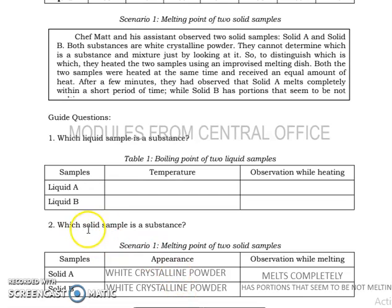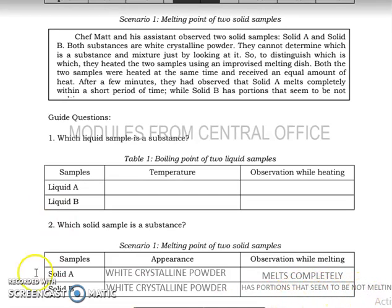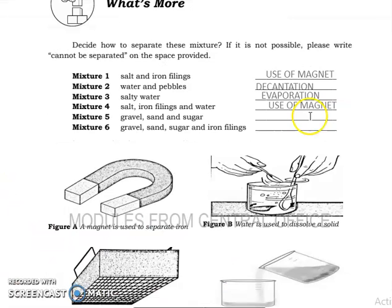For number two: which solid sample is a substance? The answer is solid A — based on the table, it melts completely. For solid B, it has portions that seem to be not melting, so solid B is the mixture. The answer for number two is solid A. To separate salt and iron filings, you can use a magnet, then water, then decantation for the salty water, followed by evaporation to get the salt.